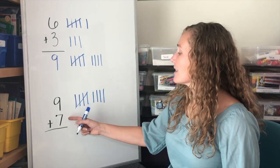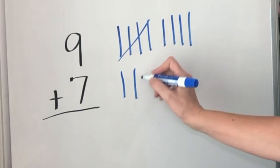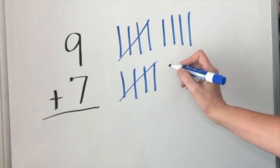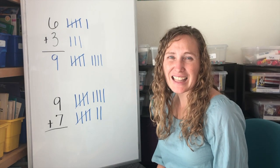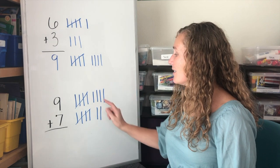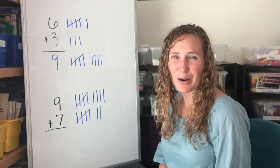Now let's make seven tally marks. One, two, three, four, five, six, seven. Seven tally marks. Nine plus seven. Let's put all those tally marks together.